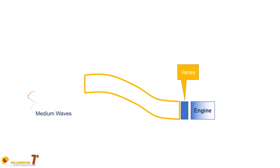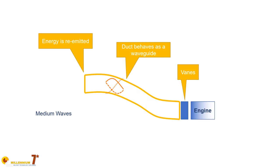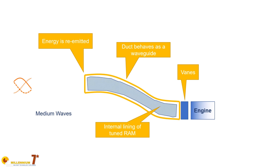At the end of the conduit you have the engine, and the first element the radiation meets are the inlet vanes — the airblades usually positioned just in front of the first compressor stage. Since the gap between the vanes is small, much smaller than the typical size of the duct, the radiation is reflected back along the duct, which still acts as a waveguide, so the radiation is actively re-emitted from the intake. The mitigation is coating the duct with a specifically tuned radar-absorbing material so the energy propagating along the duct is progressively absorbed.